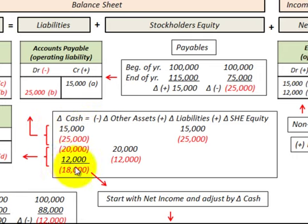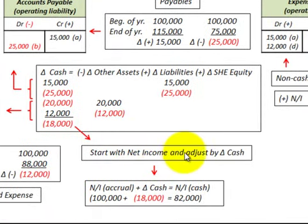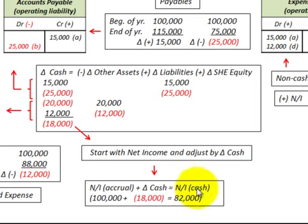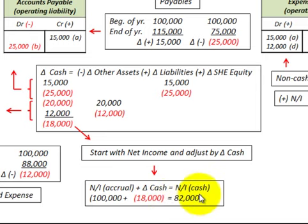We total the change in cash — that's due to our change in liabilities and our change in other assets or the inventory account. We start with net income and adjust it by the change in cash. In the example where we have $100,000 accrual net income, we add the change in cash of minus $18,000, and end up with a net income on the cash basis of $82,000.